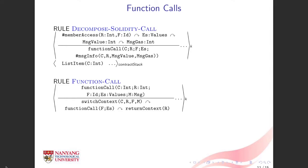The semantics rules for function calls apply to all kinds of calls in Solidity, including high-level and low-level calls, constructors, and fallback functions. For instance, if there is no function name specified, or the specified name does not match any existing function in the recipient instance, the fallback function in the recipient instance is invoked. In addition, in the case of delegate call, the recipient instance R is the same as the caller instance C, since the execution takes place in the caller's context.